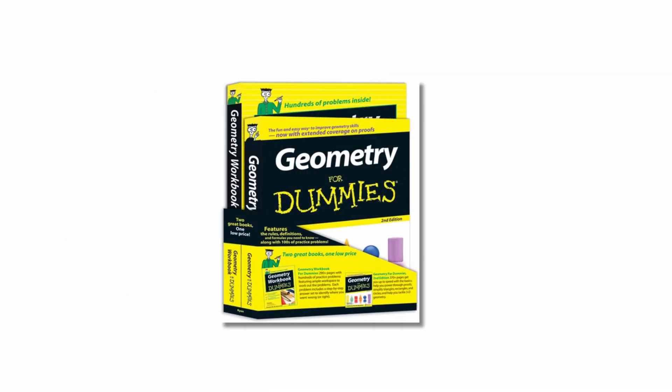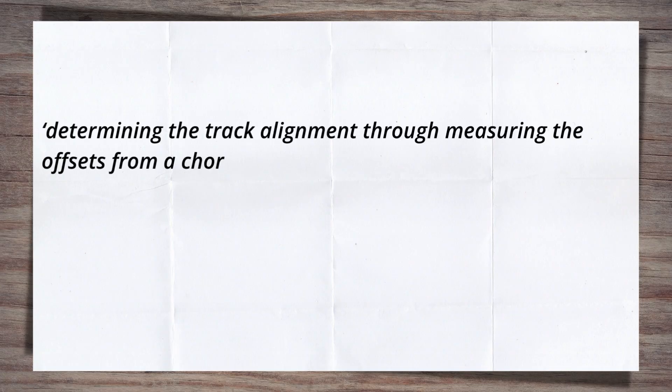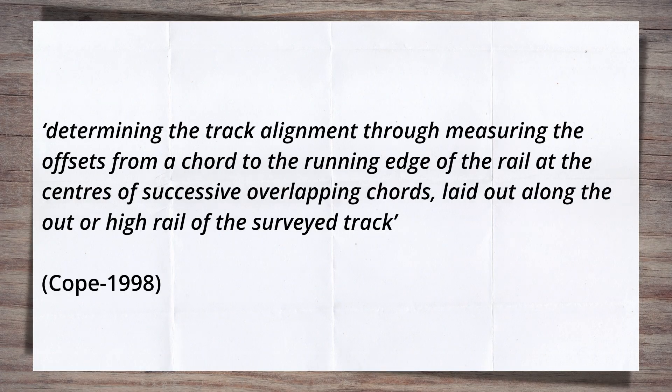In the short and brief way that technical textbooks would put it, Hallard is determining the track alignment through measuring the offsets from a chord to the running edge of the rail at the centres of successive overlapping chords laid out along the outer or high rail of the surveyed track. Got that? Simple, isn't it? Yeah, right.